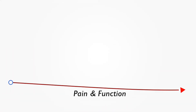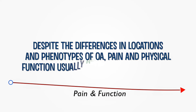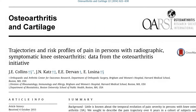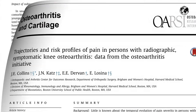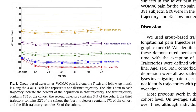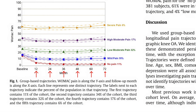Despite the wide-scale differences between patients and phenotypes of OA, courses of pain and physical functioning have been found to be predominantly stable, without substantial improvement or deterioration of symptoms over time. In a cohort of patients with radiographic knee OA, patients experiencing distinct intensities of pain at baseline — ranging from absent to severe pain — tended to remain in the same group over the six-year follow-up, with no significant changes in baseline pain scores.